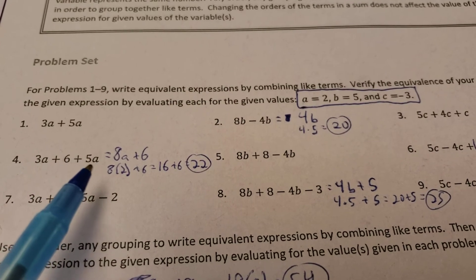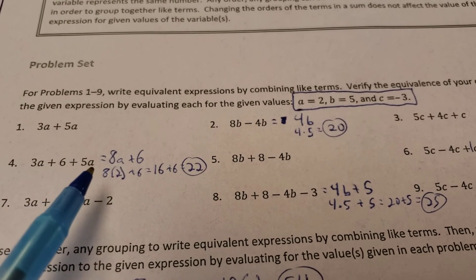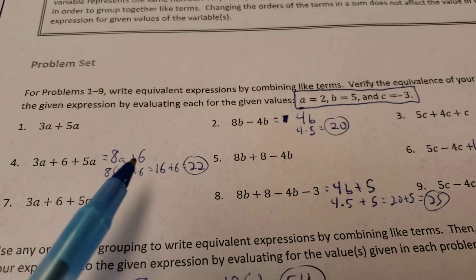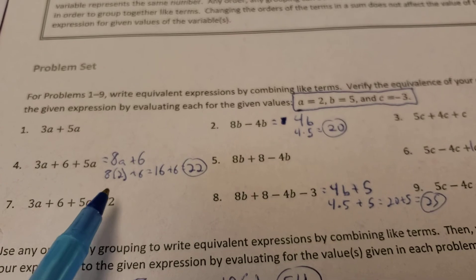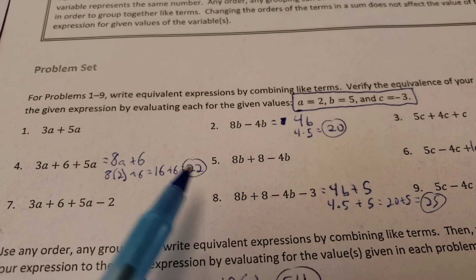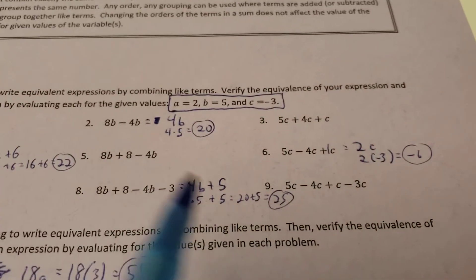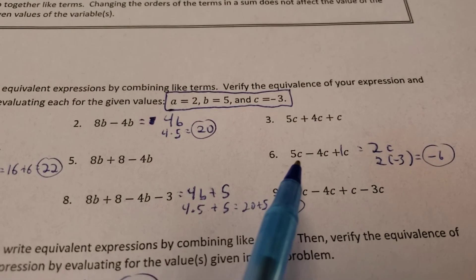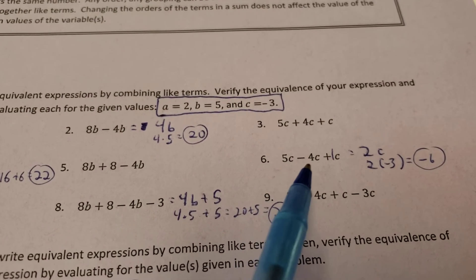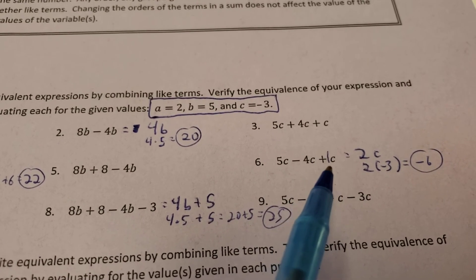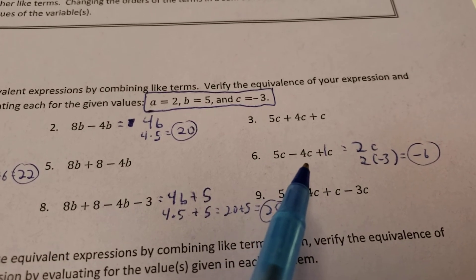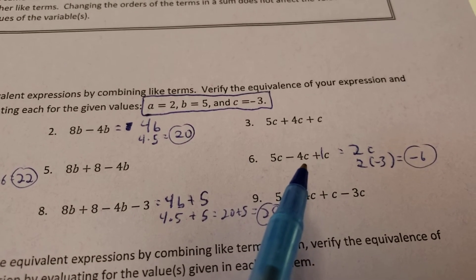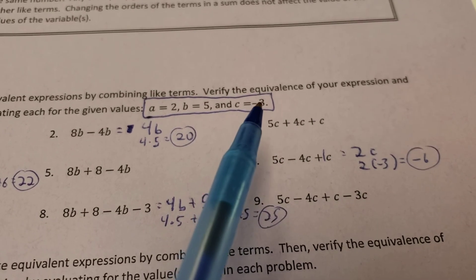3a plus 6 plus 5a. The a's can only be grouped together. So I get 8 of the a's, and the regular numbers are just the plus 6. So remember, a's are supposed to be a 2, based off of our information at the start of the problem. 8 times 2 is 16, plus 6 gives you 22. Now this one, number 6, I want to remind you about something here. I got 5c, minus 4c, and then plus c. I put a 1 in there. Remember, when a letter is all by itself, it means there's one of them. So 5 minus 4 gives me 1c, plus another c, leaving me 2c's. And c is supposed to be a negative 3. So 2 times negative 3 gives me a negative 6.